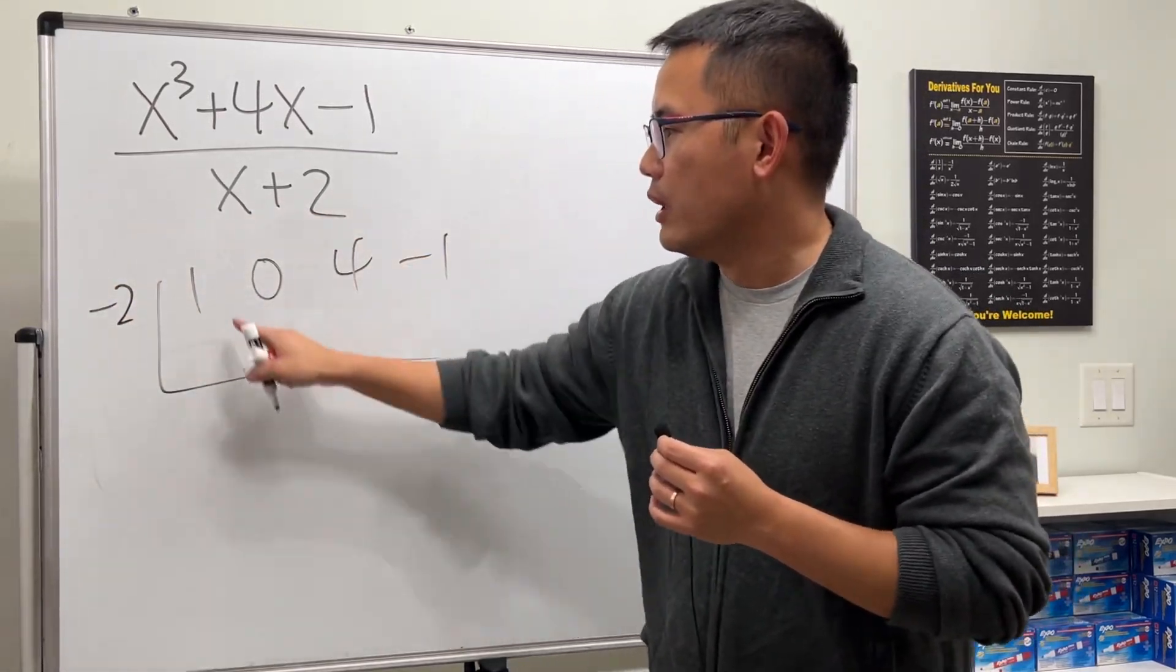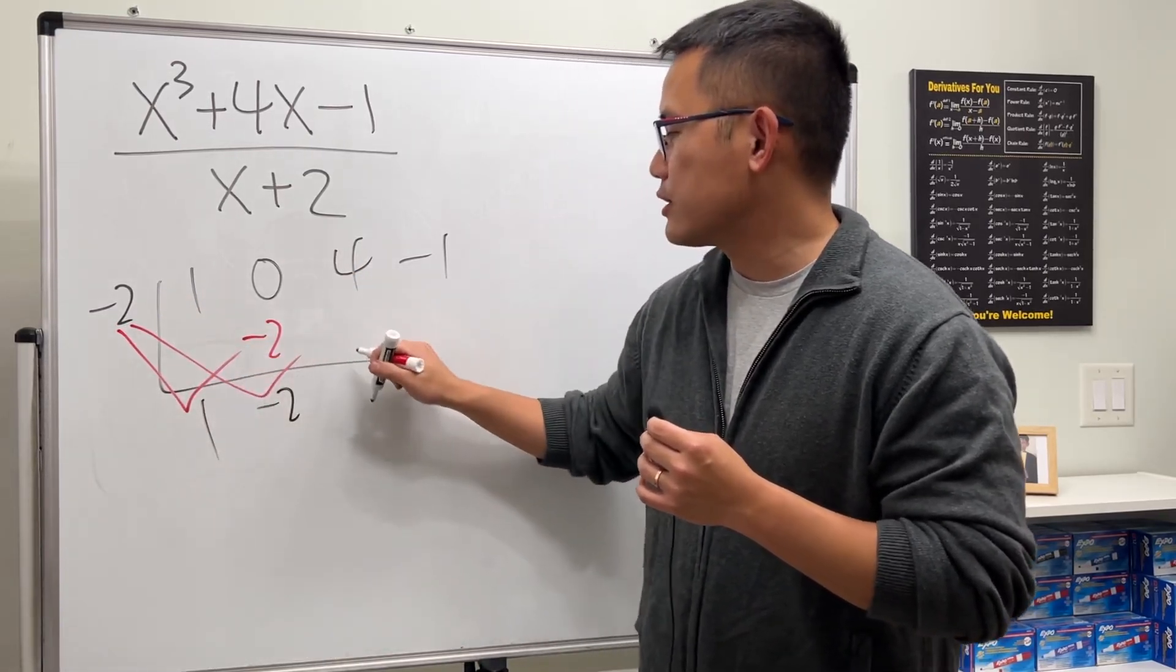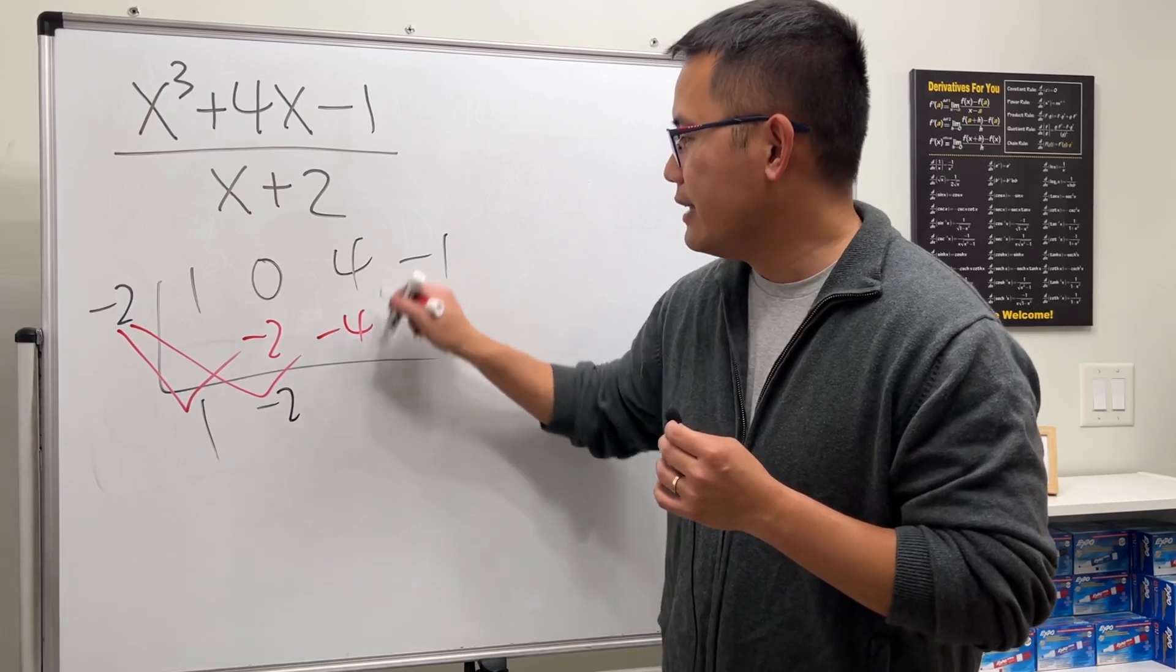This is x plus 2, so we are going to put negative 2 right here. Here we go, put down the 1 right here, and then we multiply, which is going to be negative 2. And then we add right here, which is negative 2, and this time that is going to be negative 4. And this plus that is going to be 0.